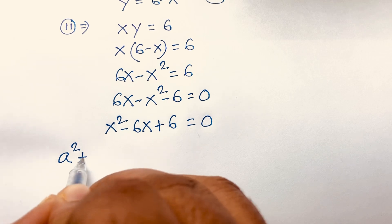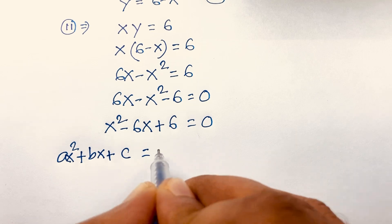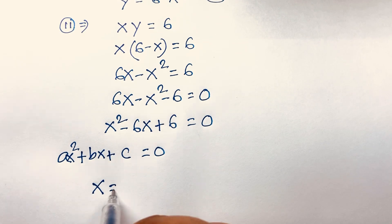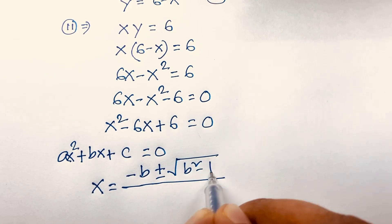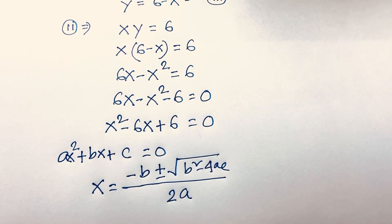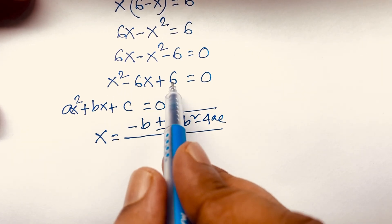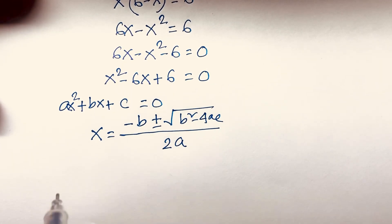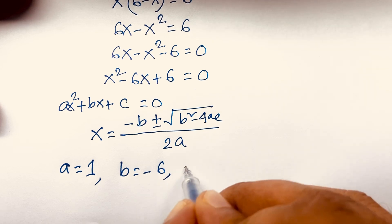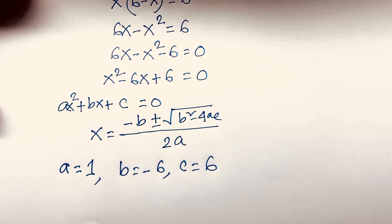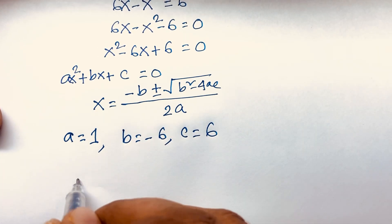Comparing with the standard form ax squared plus bx plus c equals 0, the quadratic formula gives x equals negative b plus or minus square root of (b squared minus 4ac) over 2a. Here, a equals 1, b equals negative 6, and c equals 6.